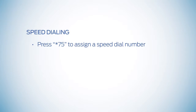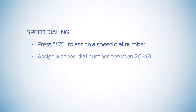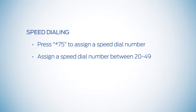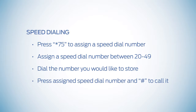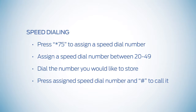You can store up to 30 speed dial numbers. Dial star 75, assign a speed dial number — which is any number between 20 and 49 — then dial the number you would like to store, including the area code. Then to call a speed dial number, press the assigned speed dial number and the pound sign.